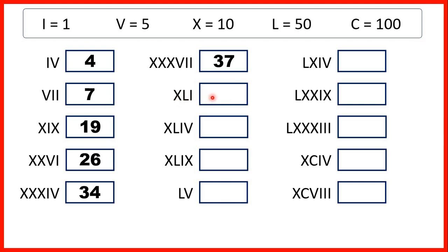XLI is 41, because XL is 10 before 50, so that's 40, and I is 1. XLIV is 44, because XL is 10 before 50, so that's 40, and IV is 1 before 5, so 4.